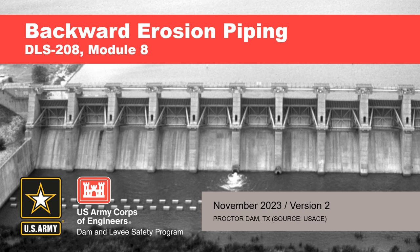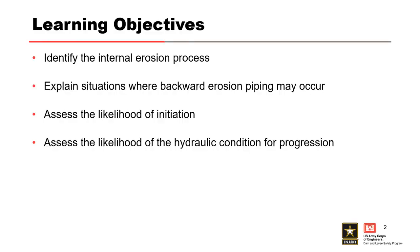This module covers backward erosion piping. The learning objectives are: identify the internal erosion processes; explain situations where backward erosion piping may occur; assess the likelihood of initiation; and assess the likelihood of the hydraulic condition for progression.